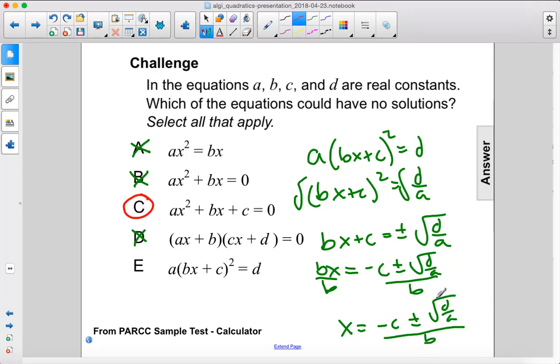So x equals negative c plus or minus the square root of d over a over b. Now, this could have no solutions if what's under here is less than 0. And that would be the case if a was 0 or if d was less than 0 and a was above 0, or if a was less than 0 and d is above 0. There's several ways where this would not have any solutions, therefore e is the other answer.